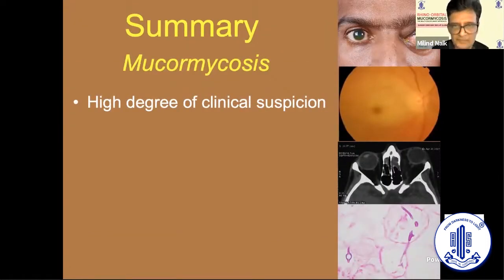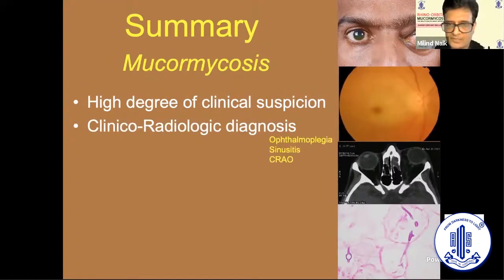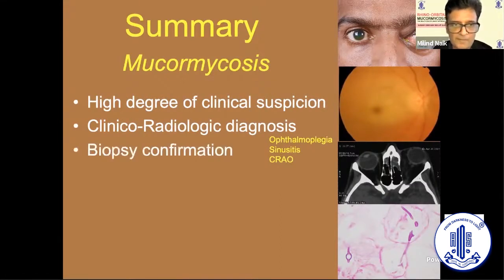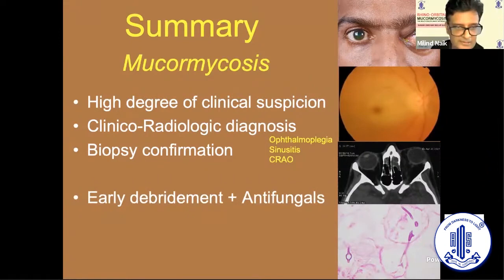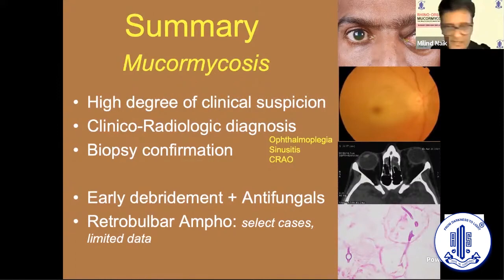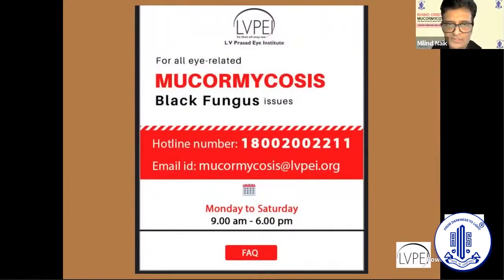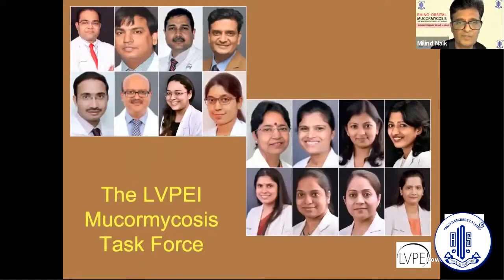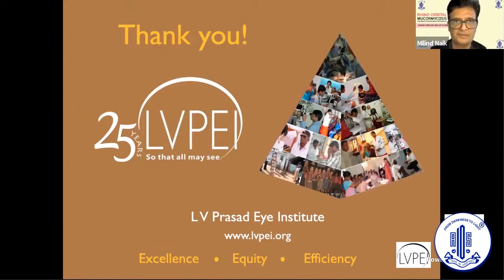To summarize: a high degree of clinical suspicion is essential. The clinical-radiologic triad of ophthalmoplegia, sinusitis, and CRAO can be very classic in post-COVID patients. Biopsy confirmation is needed, but if you see an escar you can proceed with antifungals alongside your internists. Debridement, injections, and antifungals form the treatment overview. Retrobulbar amphotericin B should be reserved for select cases given the very limited data. We have a mucormycosis hotline for patients and a team addressing their questions. A big thank you to the entire mucormycosis task force at our institute who are tirelessly working on this topic.